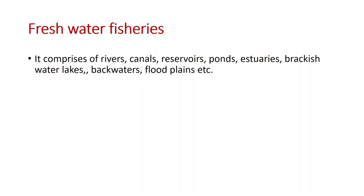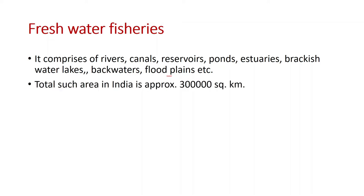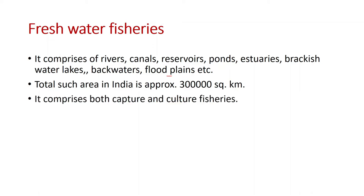The fresh water in India comprises of rivers, canals, reservoirs, ponds, estuaries, brackish water lakes, backwaters and flood plains. Total such area in India is approximately 3 lakh square kilometers. It comprises both capture and culture fisheries — capture means we capture the fishes, and culture means we farm the fishes.